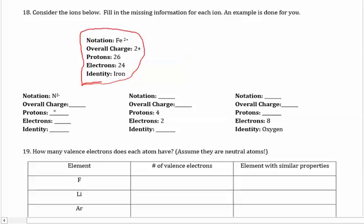So the very first one that we have to work on is N with a 3 minus next to it. So looking at the periodic table, I'm going to kind of jump all over. N is nitrogen, so we can fill that in, nitrogen. And we also know because it's nitrogen, it's number 7 on the periodic table. That gives us 7 protons.